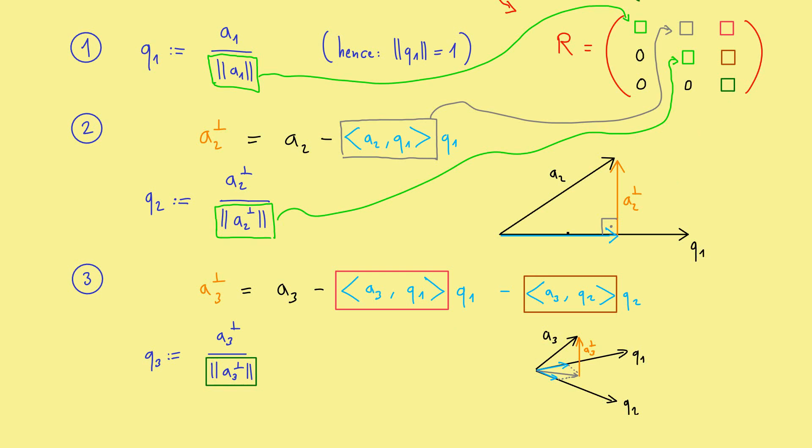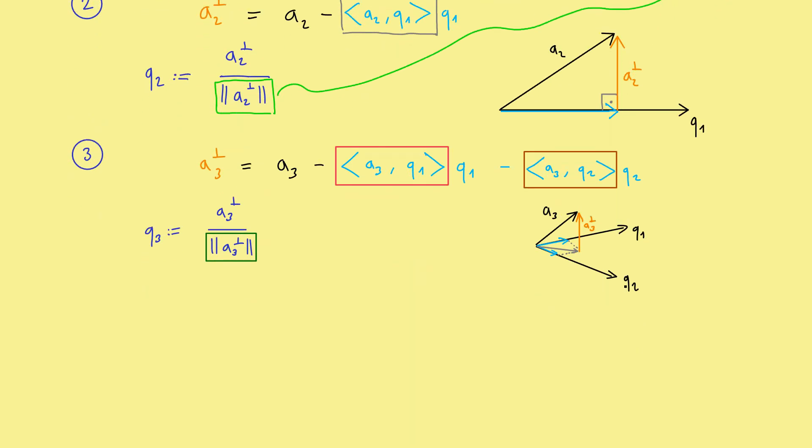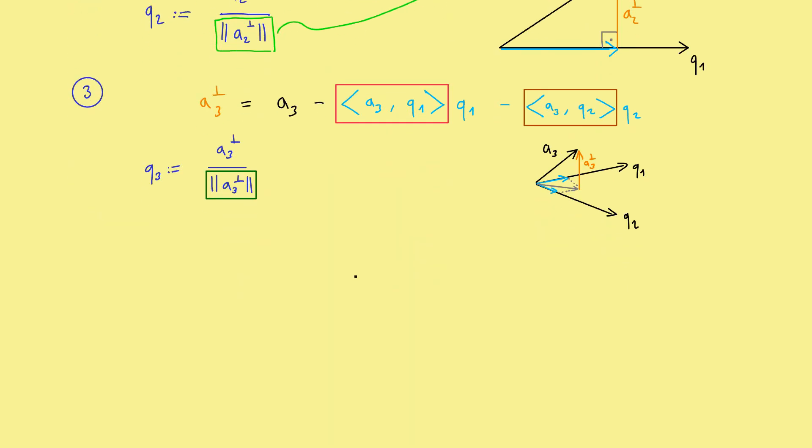And now I want to end this video with a simple example with numbers. However, let's do a quick 2 times 2 example. Okay, so this is our matrix A. And the question is now, what is Q and what is R? Both 2 times 2 matrices.